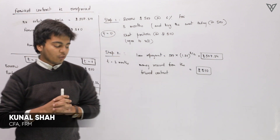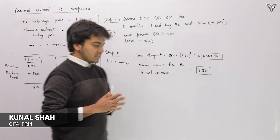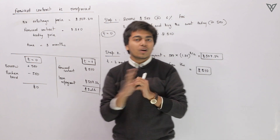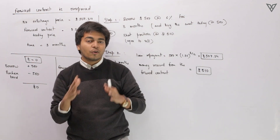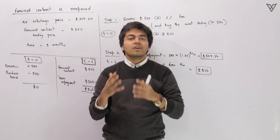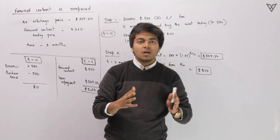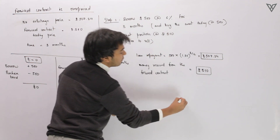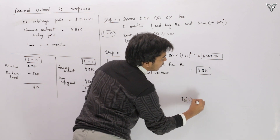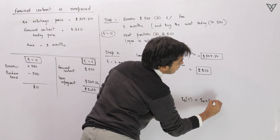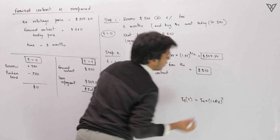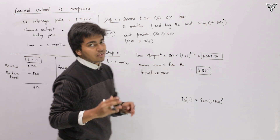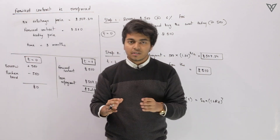Hi there. In this video, what we are going to discuss is how exactly cash and carry arbitrage works. We all know that forward prices are derived by the principle of no arbitrage. But what if the forward price is not equal to the formula F0(T) = S0 × (1 + rf)^T? What if this does not hold? That is exactly what we are going to discuss right now.